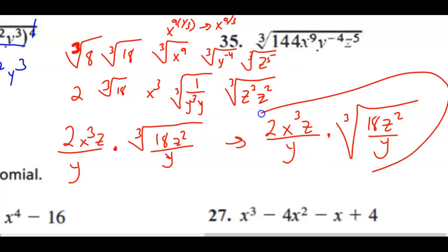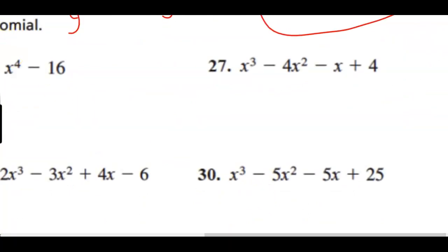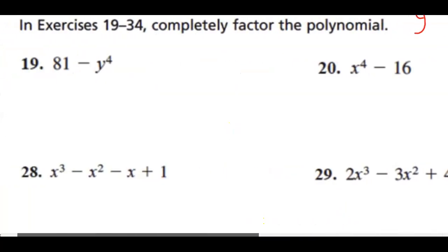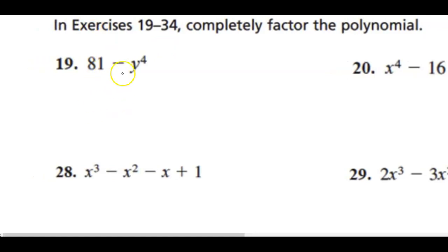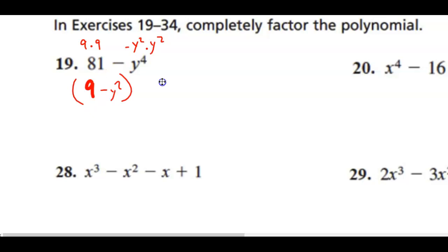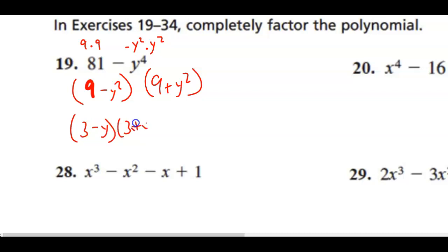For the next example we need to completely factor a polynomial. This one is a difference of two squares: 81 minus y to the fourth. We write it as 9 minus y squared times 9 plus y squared. But we're not done — 9 minus y squared is still a difference of two squares, giving us 3 minus y times 3 plus y. So the final factored form is (3 minus y)(3 plus y)(9 plus y squared).